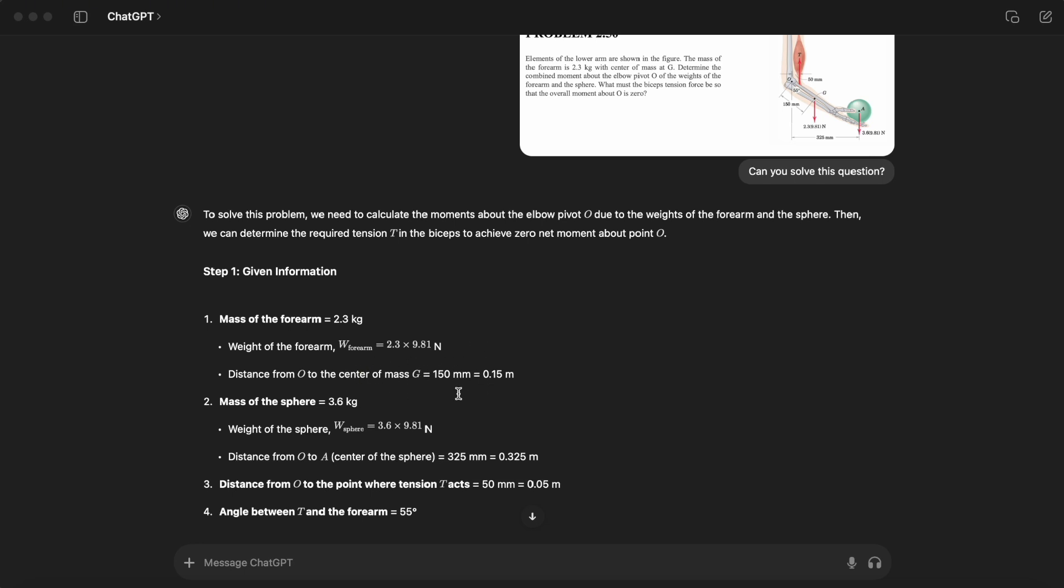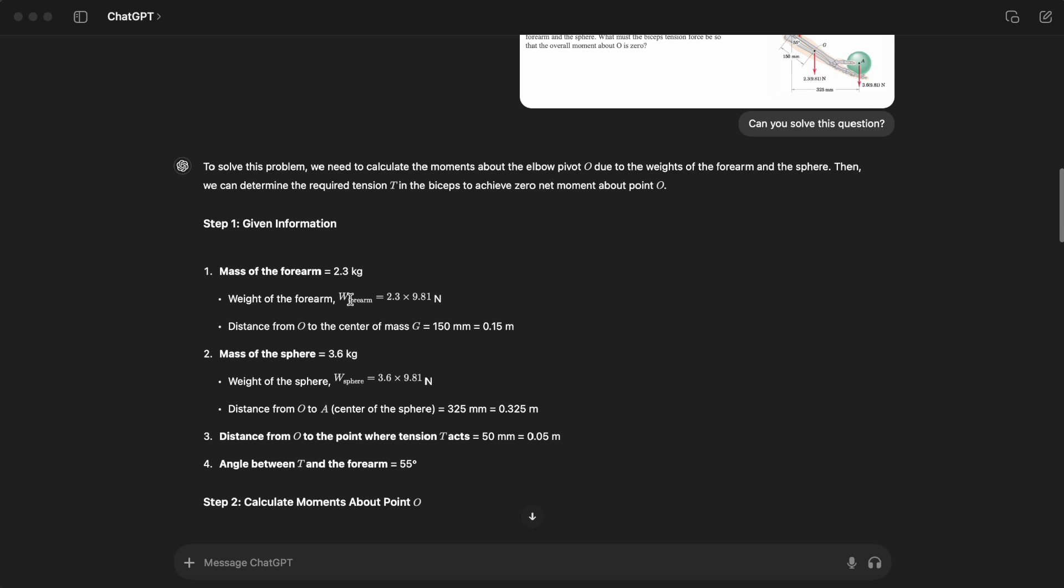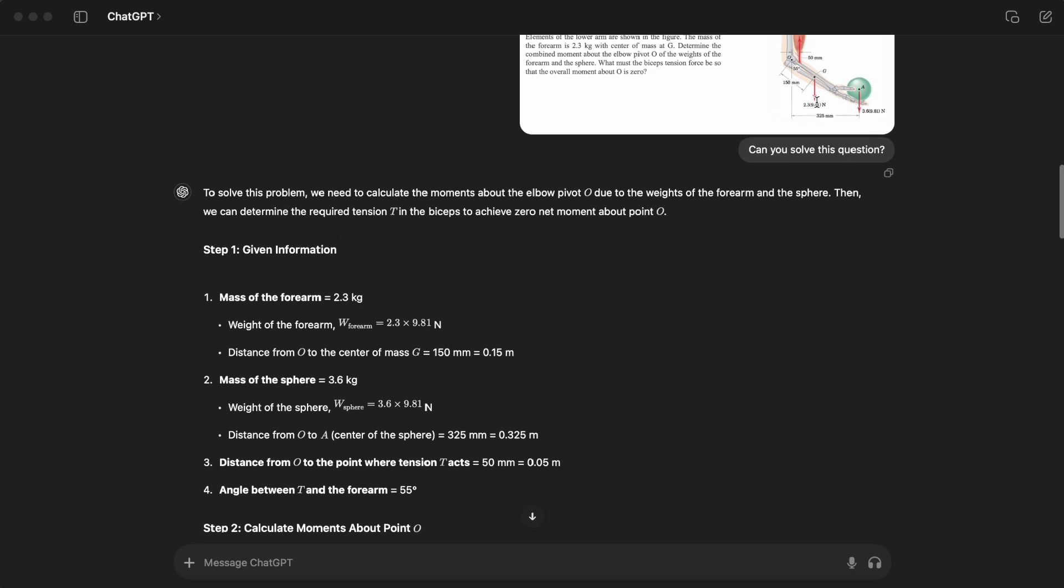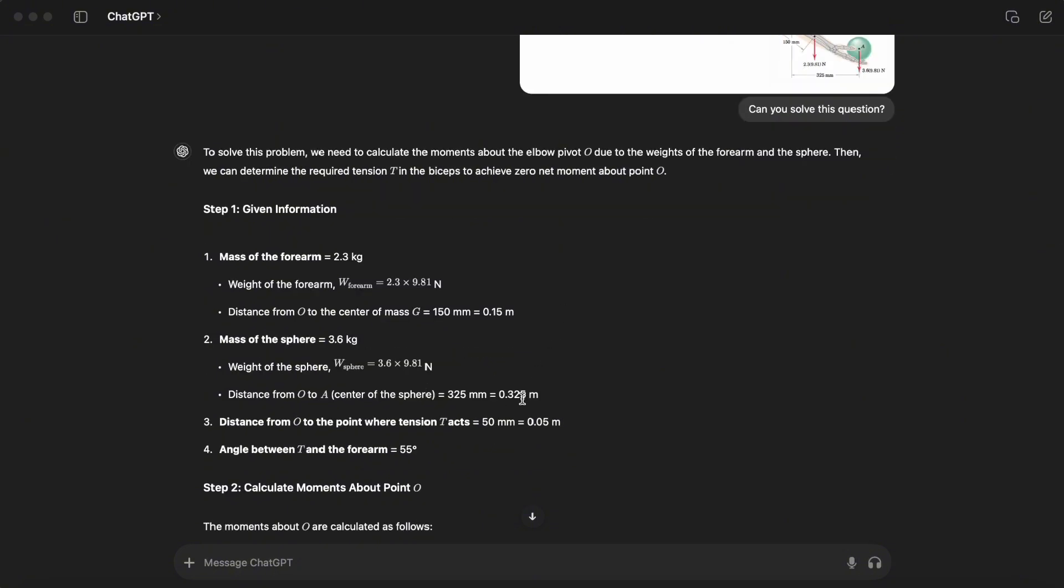That distance can be a little bit confusing because for finding the moment, we need the vertical distance, which will be actually 150 times sine of 55. It seems it did the same thing for the sphere too. It found the weight and the distance. This distance is correct because that's the 325 millimeters we have, but the other one is not the vertical distance from point O to the line of action of the forearm.